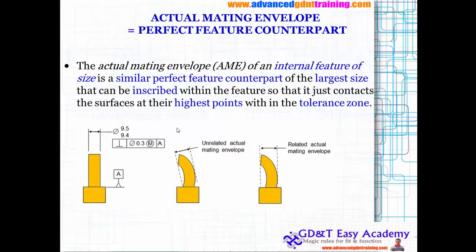The actual mating envelope and the perfect feature counterpart — these two relations you need to understand very closely. The actual mating envelope of an internal feature of size is a similar perfect feature counterpart. If you talk about an internal feature of size, you are talking about a hole, and if you are talking about an external feature of size, you are talking about a shaft.